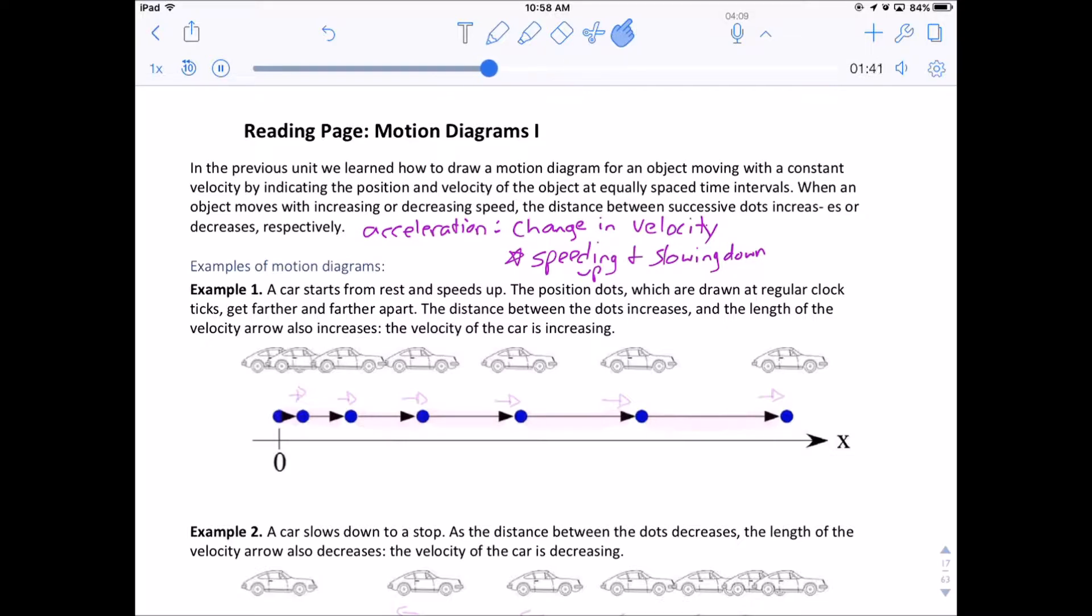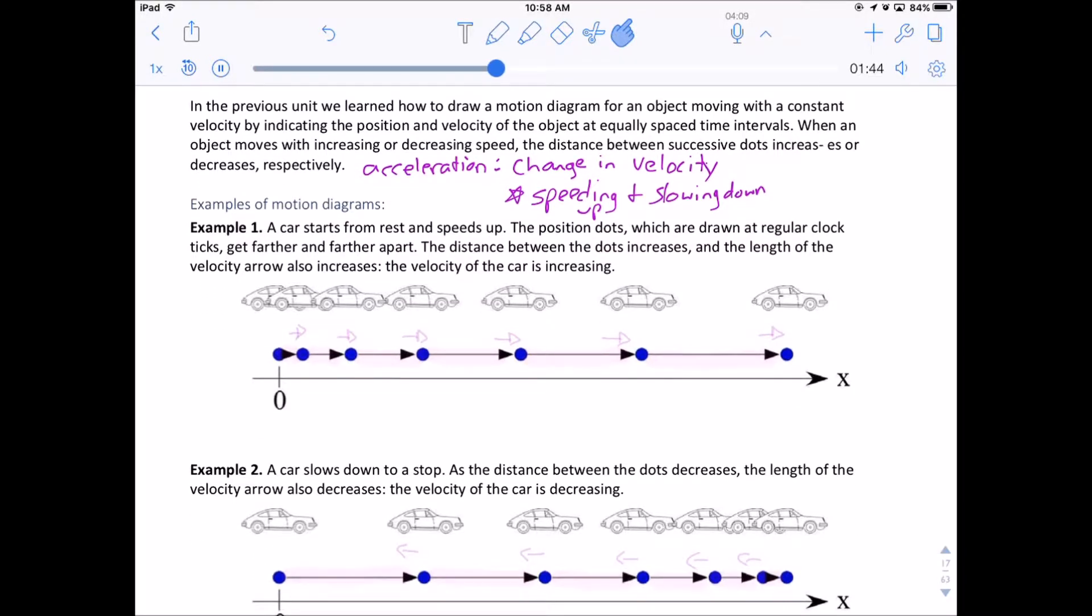So this first one here, we've got the car that is speeding up, and notice that it has a short arrow, and then that arrow gets a little bit longer each time. Now there's something we're going to add on to our motion diagrams later that kind of gives us an idea of how the velocity is changing, they're called acceleration arrows, but we're not going to do that quite yet. I'm going to show you what they look like though. So what I do is I draw an extra little arrow on top that shows how the velocity is changing. And essentially what I'm doing is I'm showing what is being added on, so that velocity is increasing.